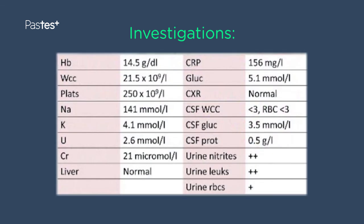Here are the results. Haemoglobin is 14.5, which is fairly normal for three weeks. The white cell count is raised above normal. Platelet count is normal. Liver function is normal. CRP is very raised at 156. The rest of the results appear normal until we get to the urine, which shows nitrites, leukocytes, and red blood cells. Nitrites in the urine suggest bacteria have been splitting urea. From this we can determine that this child has a severe urinary tract infection — that's the source of the fever, the raised CRP, and the raised white cell count.